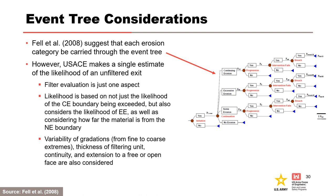Fell et al. 2008 suggested that each erosion category be carried through an event tree. However, USACE makes a single estimate of the likelihood of an unfiltered exit because filter evaluation is just one aspect of continuation. The likelihood of continuation of erosion is based on not just the likelihood of the continuing erosion boundary being exceeded, but also the likelihood of excessive erosion, how far the material is from the no erosion boundary, the variability of the gradations from fine to coarse extremes, the thickness of the filtering unit, upstream to downstream continuity, and extension to a free or open face.